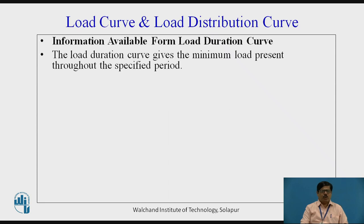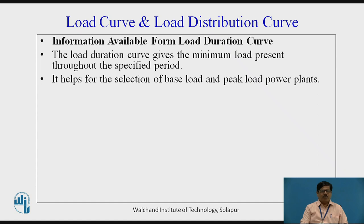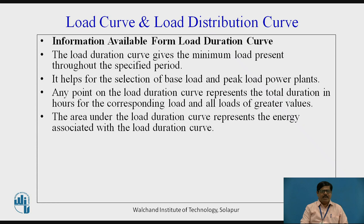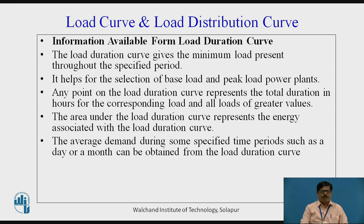Now, what information do we get from the Load Duration Curve? The Load Duration Curve gives the minimum load present throughout the specified period. It helps in the selection of base load and peak load power plants. When the load is almost uniform and constant, we can run the base load plant. But if the load exceeds the average or minimum required load, then we have to operate the peak load plant for that particular period. Any point on the Load Duration Curve represents the total duration in hours for the corresponding load and all loads of greater value. The area under the Load Duration Curve represents the energy associated with the load duration. The average demand during a specified time period such as a day or month can also be obtained from the Load Duration Curve.